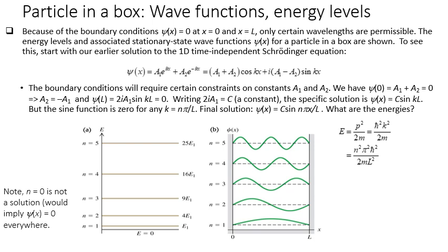For example, a typical exam question asks for the ratio of energy eigenvalues, such as E3 to E1. We calculate 9E1 divided by E1, which gives 9 to 1. Similarly, the ratio of the second excited state (n=3) to the ground state (n=1) is also 9 to 1.